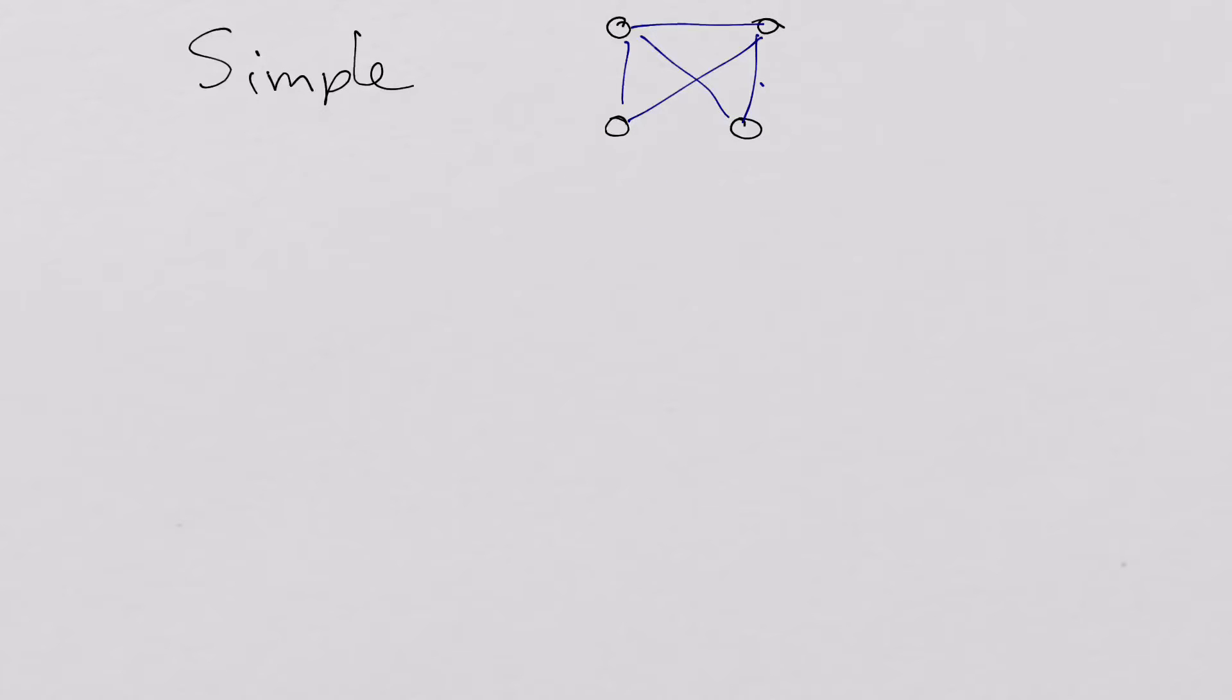Connected is clearly what's going on here. A disconnected graph, or one that is not connected, for example, is that. As you can see, this node here is not connected. So you need to know what simple and connected is.